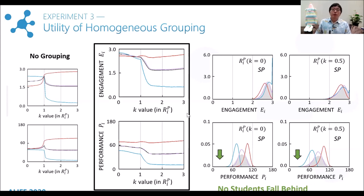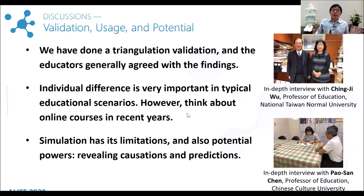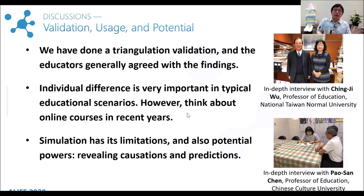As a conclusion of this research, we would suggest a good structure is grouping students by their performance, while at the same time rewarding students equally. At last, we want to share some discussions we had with other educational experts, and you can find more details, including the criticisms, in our paper.